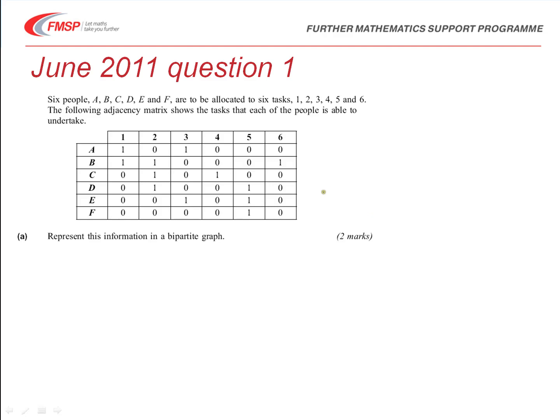So you can see in this task there are six people, labelled A, B, C, D, E and F, who are to be allocated to six tasks, numbered 1 to 6. And the matrix below shows the possible allocation of tasks that each person can undertake. So A can do tasks 1 and 3, B can do 1, 2 and 6, C can do 2 and 4, and so on.